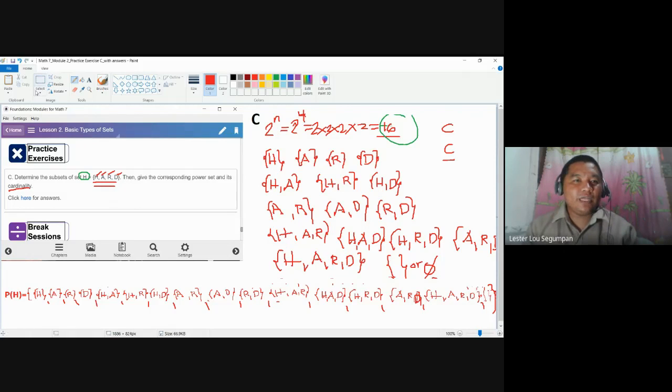In cases wherein you don't like to use empty set as the last, you may always use null set if you want. So, let's count. You have 1, 2, 3, 4, 5, 6, 7, 8, 9, 10, 11, 12, 13, 14, 15, 16 subsets.